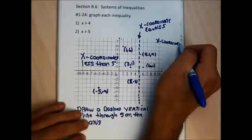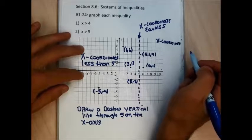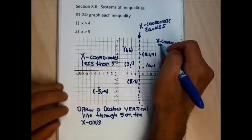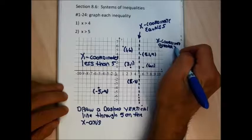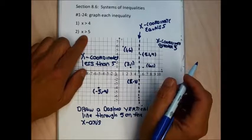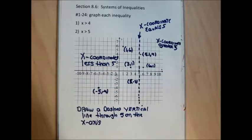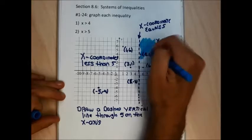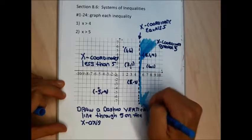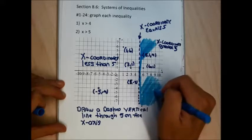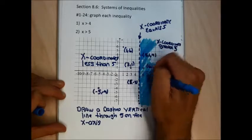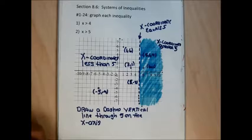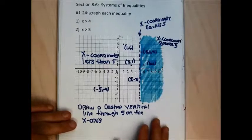So this line separates the graph into segments: points with x-coordinates less than 5 are to the left, points on the line have x-coordinates equal to 5, and points to the right have x-coordinates strictly greater than 5. I need to identify all the points on a two-dimensional graph whose x-coordinates are greater than 5, so I do that by shading every point to the right of this line. The shading could go on forever, but I'll stop it there.